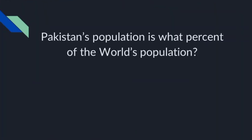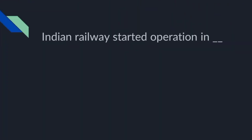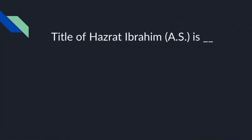The circumference of the Earth is about 40,075 kilometers. Indian Railway started operations in 1853. The title of Hazrat Ibrahim is Khalilullah. This concludes the past paper of GK 2019.